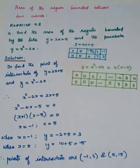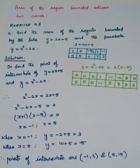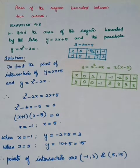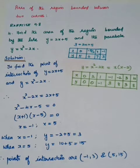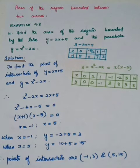To summarize: first find the point of intersection, second draw the diagram, third choose the axis. If x-axis is chosen, the formula is integral a to b of (y1 minus y2) dx — compared to a single curve where it's integral a to b of y dx. If y-axis is chosen, use the formula integral c to d of (x1 minus x2) dy.